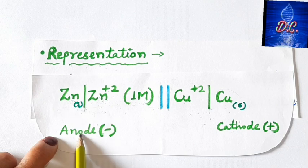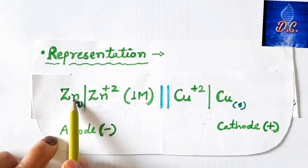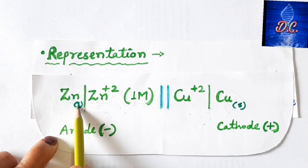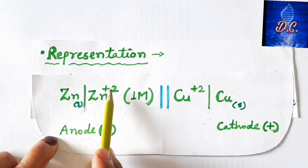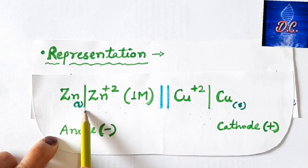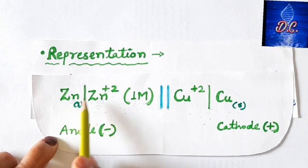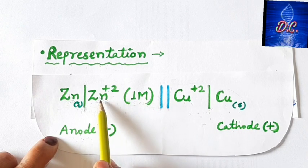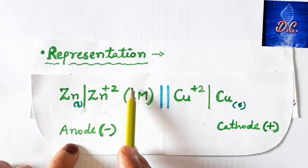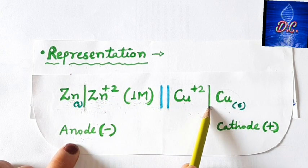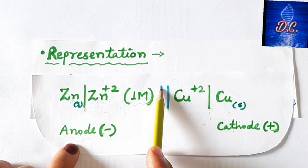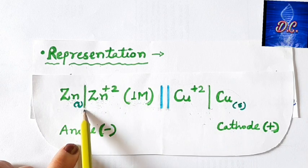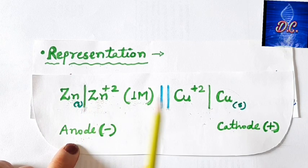The first half cell acting as anode (where oxidation occurs — zinc atoms converting to zinc ions) is represented as: Zn(s) | Zn²⁺(aq). The solid zinc rod and the aqueous phase are separated by a single vertical line, which represents the interface or boundary between two different phases. The concentration (1 molar) is shown in brackets. These two vertical lines represent the salt bridge connecting the two half cells.